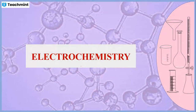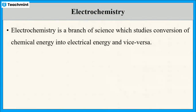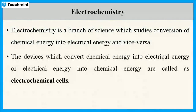In this session I am going to explain about electrochemistry. Electrochemistry is a branch of science which deals with the conversion of chemical energy into electrical energy or the conversion of electrical energy into chemical energy. The device which converts chemical energy into electrical energy or electrical energy into chemical energy is called electrochemical cells.